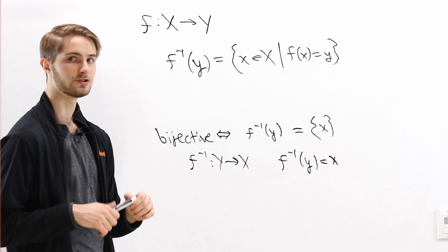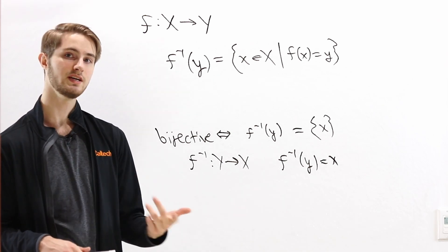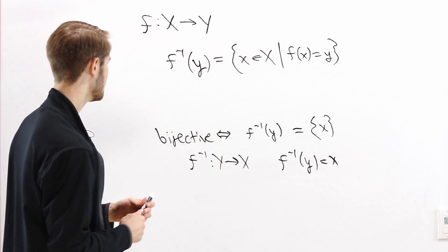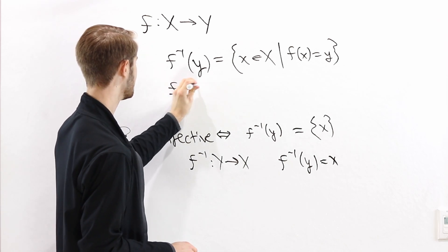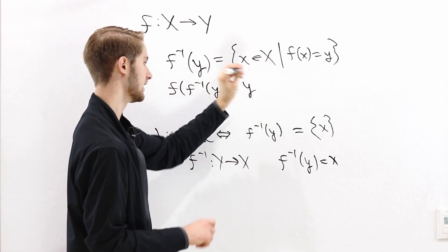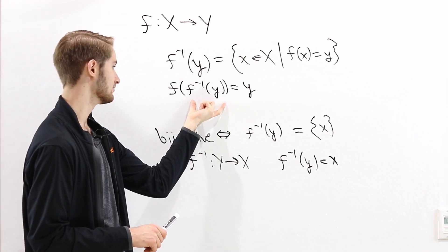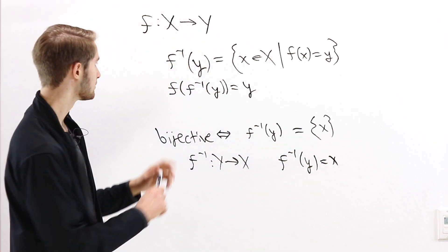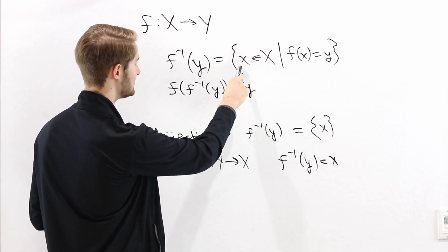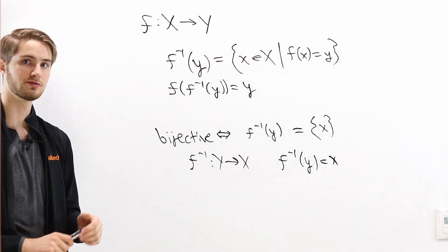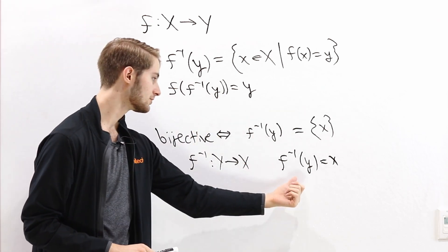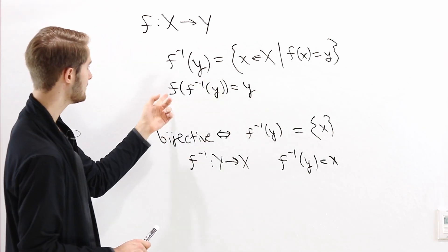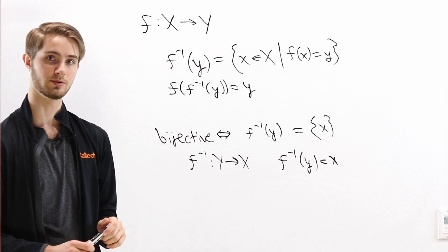It turns out that f inverse defined this way is a two-sided inverse of f. For it to be a right inverse, we need f of f inverse of y to equal y. What is f inverse of y? It's the element of the preimage of y. The preimage of y only contains elements x that map to y under f, so by definition f maps f inverse of y to y. Therefore f of f inverse of y equals y.